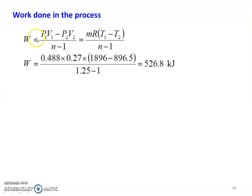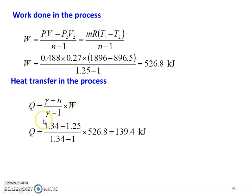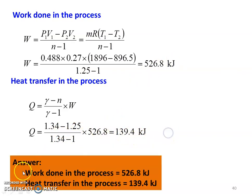Work done for the polytropic process: W = MR(T1 − T2) / (N − 1) = 0.488 × 0.27 × (1896 − 896.5) / (1.25 − 1) = 526.8 kJ. Heat transfer during the process: Q = [(γ − N) / (γ − 1)] × W = [(1.34 − 1.25) / (1.34 − 1)] × 526.8 = 139.4 kJ. Work done = 526.8 kJ, heat transfer = 139.4 kJ.